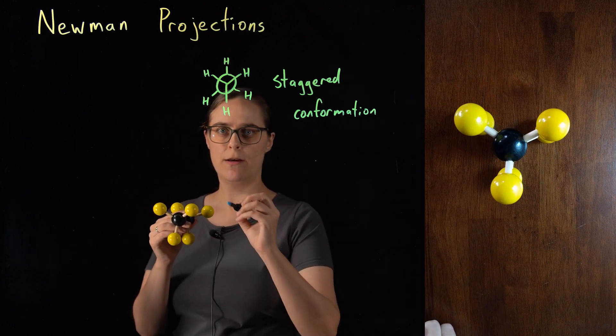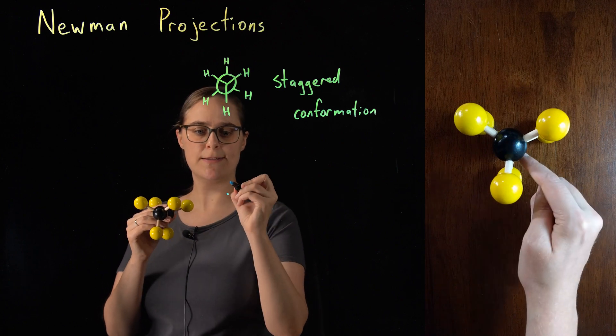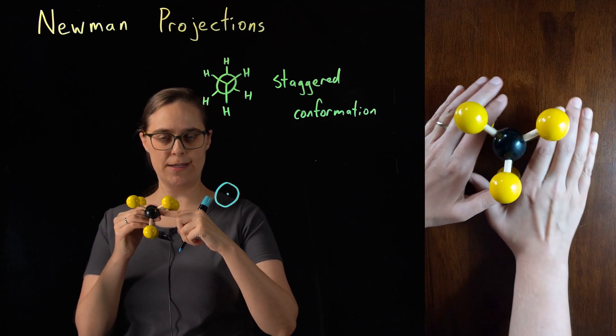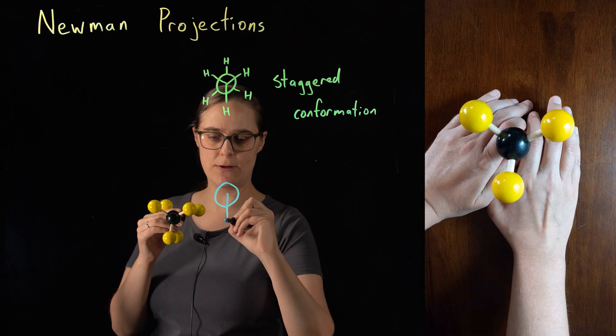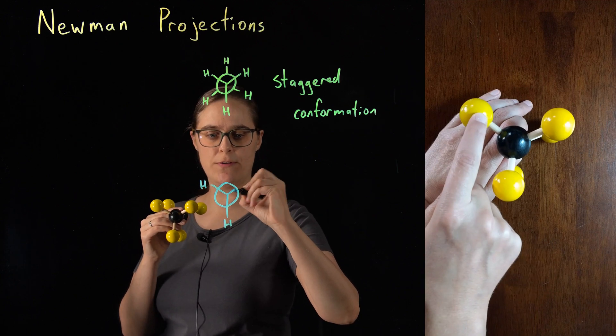Same procedure. Carbon in the front is a dot. Carbon in the back is a circle. This carbon in the front, I need to draw the three hydrogens. One is down. One is up and to the left. One is up and to the right.